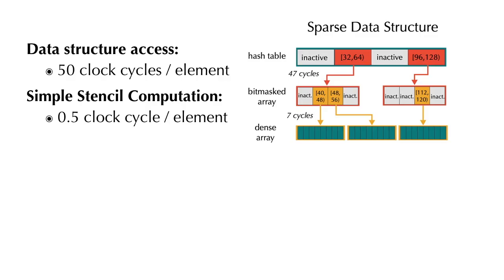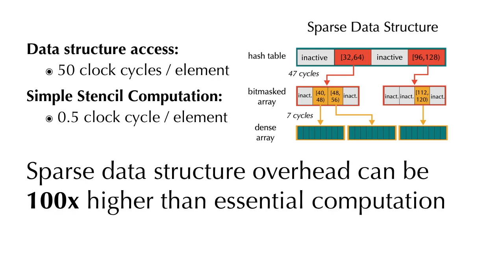For example, on this CPU data structure, accessing one element can take up to 50 clock cycles, while a vectorized stencil operation may take only 0.5 cycles per element. A naive implementation will lead to a data structure overhead that is 100 times higher than the cost of essential computation.